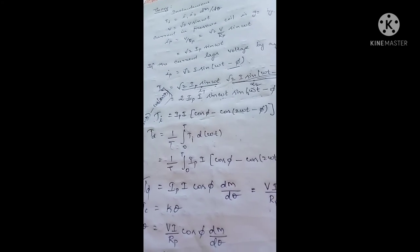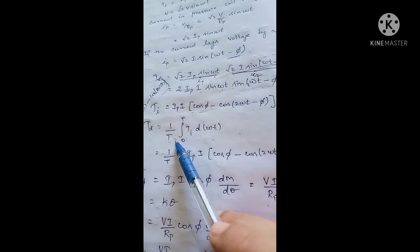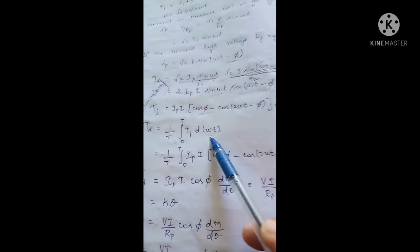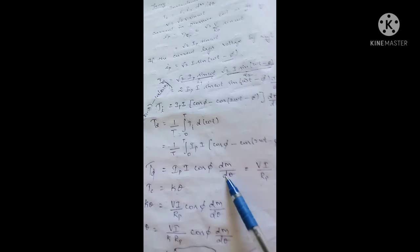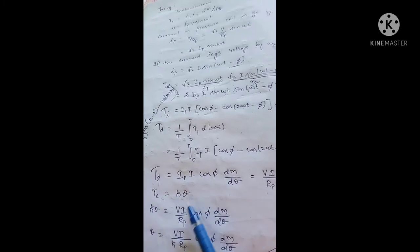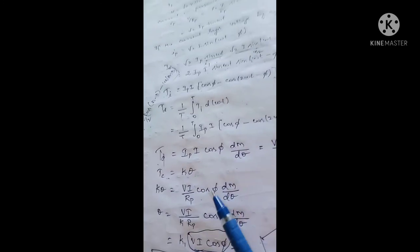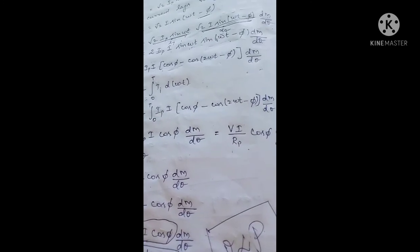To summarize the derivation: first we derived the instantaneous torque equation, then integrated it with respect to ωt to get the average deflecting torque Ip · I · cos φ · dM/dθ. Once this deflecting torque is balanced by the controlling torque, the pointer reaches a steady position, and θ is proportional to power P. This is the construction and working of an electrodynamometer wattmeter.